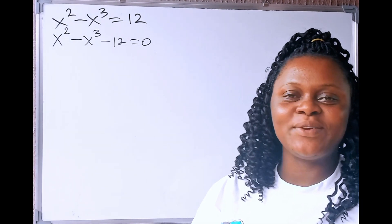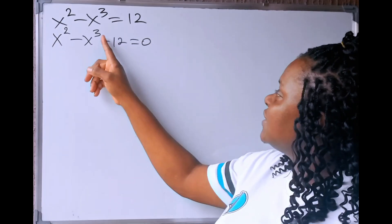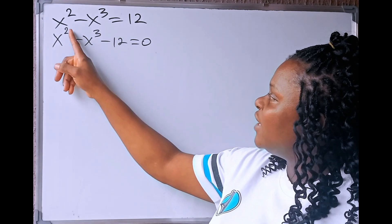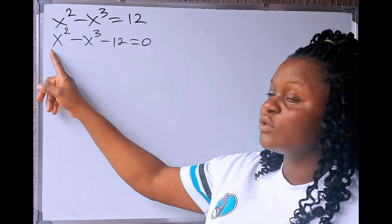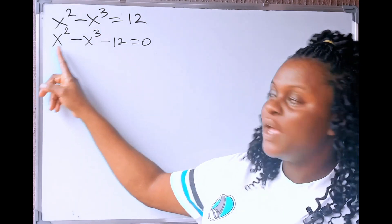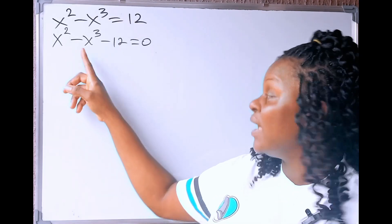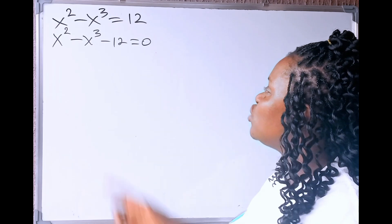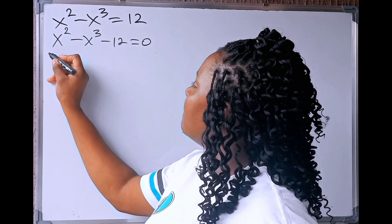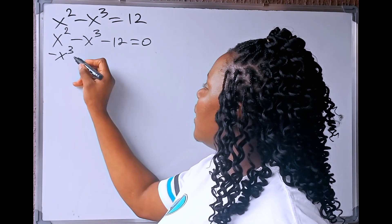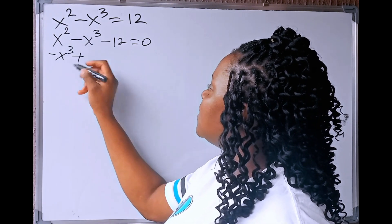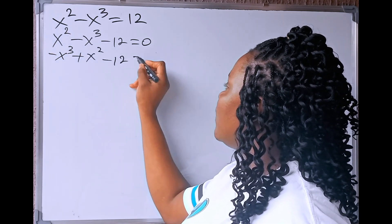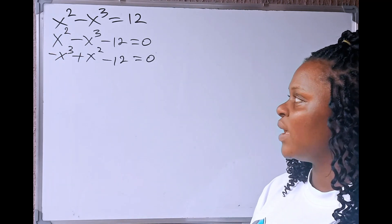But looking at this equation, you can see that this one that is in cube and this one that is square — this cube is supposed to come first before the one that has square. So, we are going to rearrange this by writing minus x cubed plus x squared minus 12 is equals to zero.